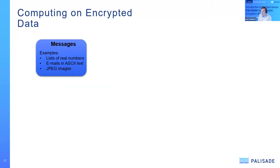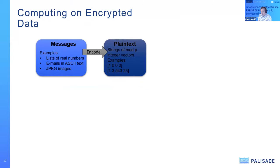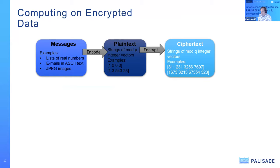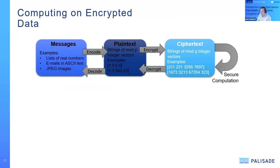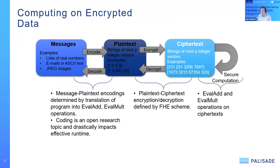In terms of computing on encrypted data, there's a concept of messages that are brought in, then encoded into plaintext, then encrypted into ciphertext, then computed on. After computing is done, the resulting data is decrypted, decoded, and passed back as messages. Each layer of these hierarchies is supported by Palisade, including encodings, various encryption-decryption schemes, and various evaluation schemes that support eval-add, eval-mult, eval-rotate, and a few other evaluation operations on the homomorphic crypto side.